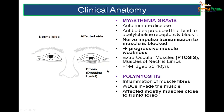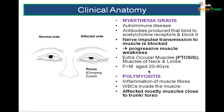Myasthenia gravis is an autoimmune disease where antibodies prevent receptors from working, blocking nerve impulse transmission and leading to muscle weakness. As seen in the diagram, there is ptosis — a drooping upper eyelid on the affected side. Extraocular muscles are most commonly affected; the person may turn their head backwards to look forward. It is seen more in females, around age 20 to 40 years.